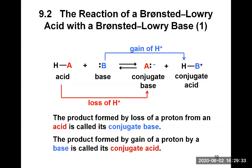So we say that HA and A- form one conjugate acid-base pair, and HB+ and B form another conjugate acid-base pair.